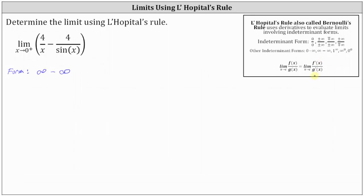Just because we don't have one of the correct indeterminate forms for L'Hôpital's rule, it doesn't mean we can't use it. It just means we have to change the form of the original function. So in this case, let's try determining the difference of 4 divided by x and 4 divided by sine x, and let's work this out below.